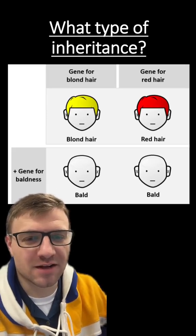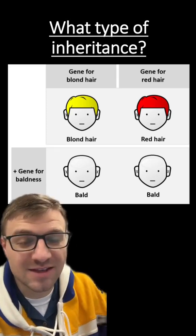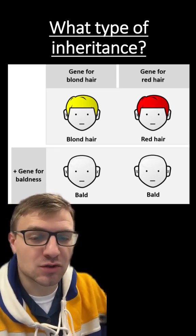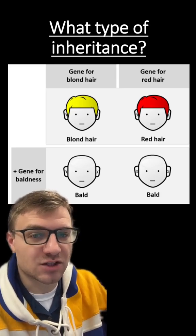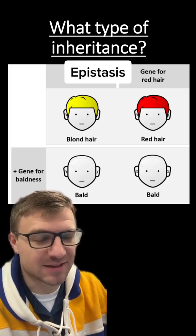All right, here's our second type of inheritance. This is when one gene is going to control the expression of a second gene. In this example, the first gene is going to control the production of hair, while the second gene is going to control the production of what color that hair is. And this is an example of epistasis.